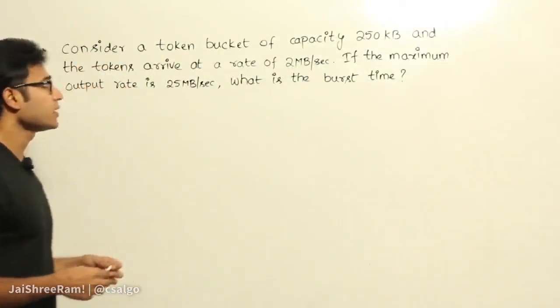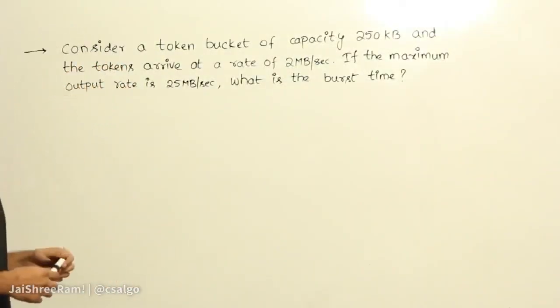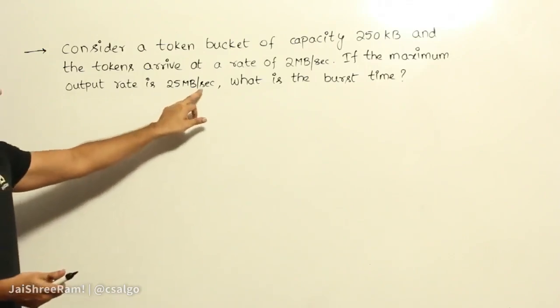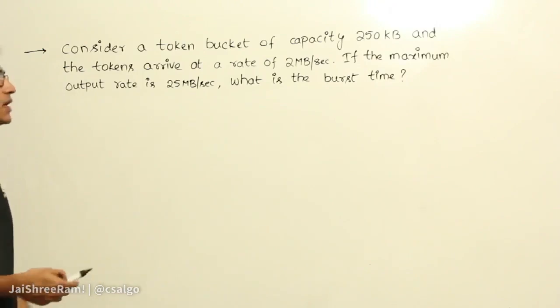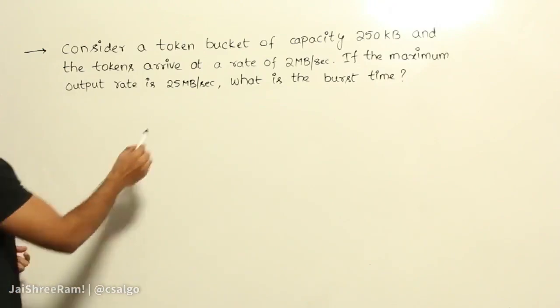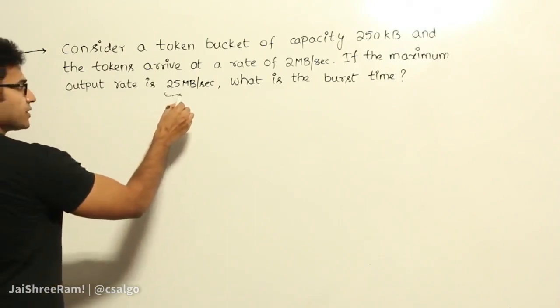Now let's see this question on the token bucket. Consider a token bucket of capacity 250 KB and the tokens arrive at a rate of 2 Mbps. If the maximum output rate is 25 Mbps, then what is the burst time? They are saying that if the maximum output rate we have achieved is this much,